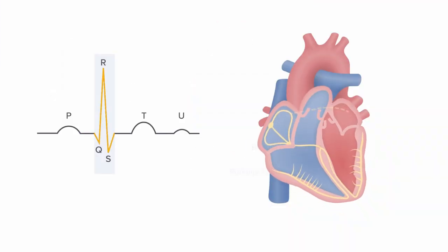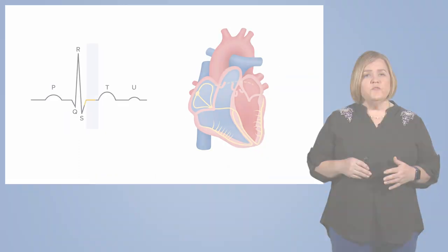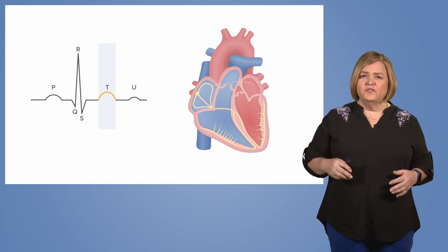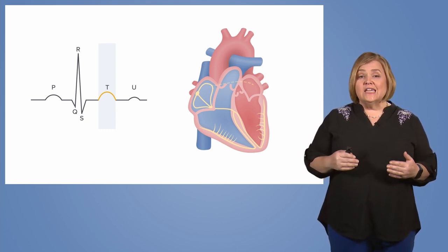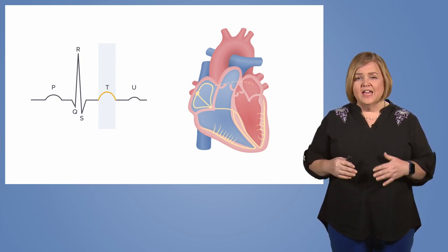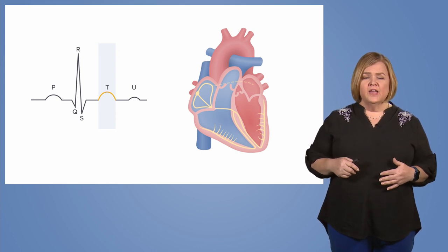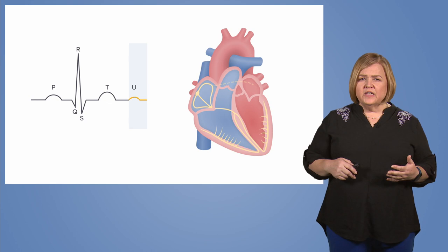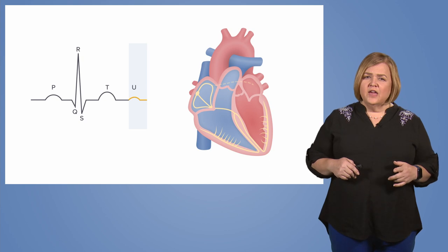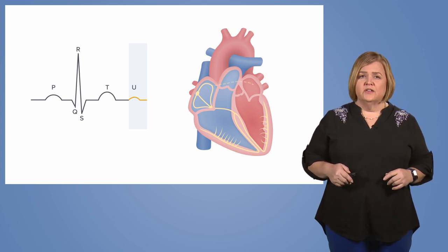Next, we have the QRS complex, which represents ventricular contraction caused by the migration of the impulse from the AV node to the Purkinje fibers. Moving on, we can see the T wave, which is caused by repolarization or relaxation of the ventricles. The interval between ventricular depolarization and repolarization gets documented as the ST segment. Finally, we have the U wave, which is believed to be the product of a delayed repolarization of the Purkinje fibers. Remember, this wave may or may not be present on the ECG strip.